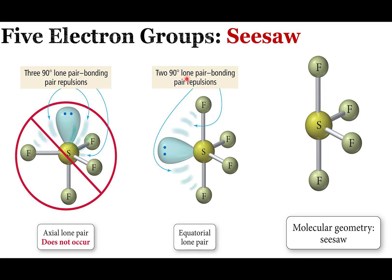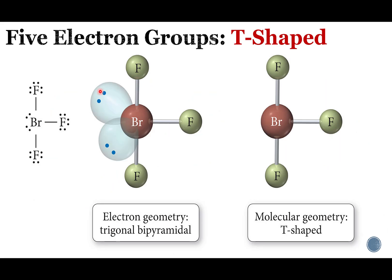If we have one lone pair on the central atom, that lone pair goes on the equator, giving us a seesaw molecular geometry — the electron geometry is still trigonal bipyramidal. If we add another lone pair on the central atom, the electron geometry remains trigonal bipyramidal, and now the molecular geometry is a T-shape. And if we were to add a third lone pair, it would again go on the equator, and what we'd be left with is a linear molecule.